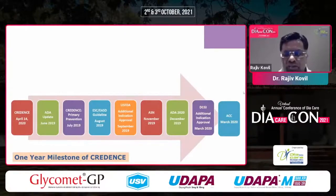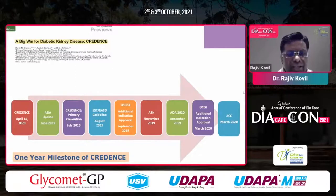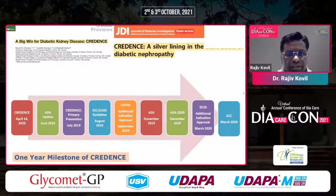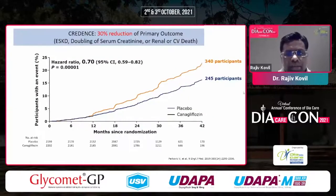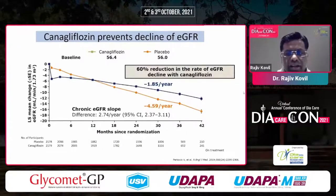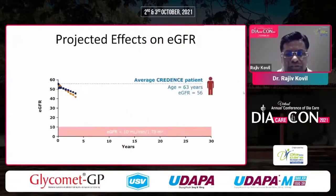The DCGI also approved canagliflozin for this indication in March 2020 — a big win for diabetic kidney disease. Today, apart from ACE and ARB, you can add an SGLT2 — canagliflozin or dapagliflozin — to prevent progression of chronic kidney disease. The CREDENCE data showed a 30% reduction in the primary outcome. Regarding eGFR preservation, it prevents eGFR decline from approximately 5 mL/hr to 1.85 mL/hr — a 60% reduction of eGFR decline.